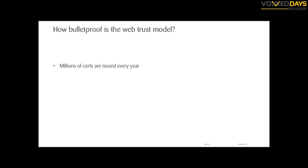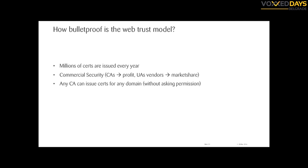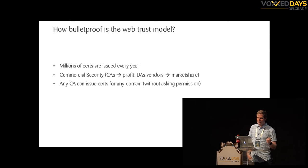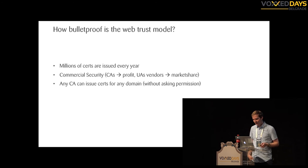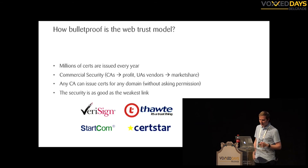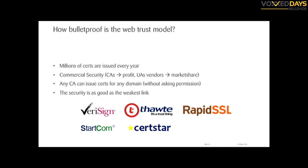The problem is if you look in Firefox you have more than 100 different certificate authorities — do you trust them all? Because the big problem with this trust model is that if one is compromised, all trust is broken. Your browser will validate a malicious certificate and you'll have a false feeling of security. Every year millions of certificates are issued, and commercial certificate authorities prioritize market share over security. Also, any CA can issue a certificate for any domain without asking permission — that's one of the biggest problems.